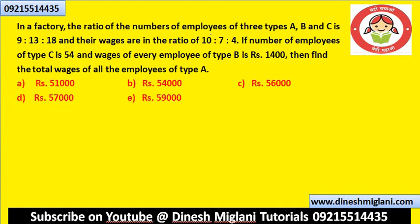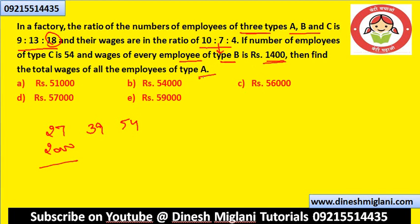In a factory, the ratio of employees of three types A, B, C is 9:13:18 and their wages are in the ratio 10:7:4. The number of type C employees is 54, so multiplying by 3 gives A=27, B=39, C=54. Wages of each type B employee is 1400, so type A wage is 2000. Total wages of all type A employees: 27 × 2000 = 54,000.